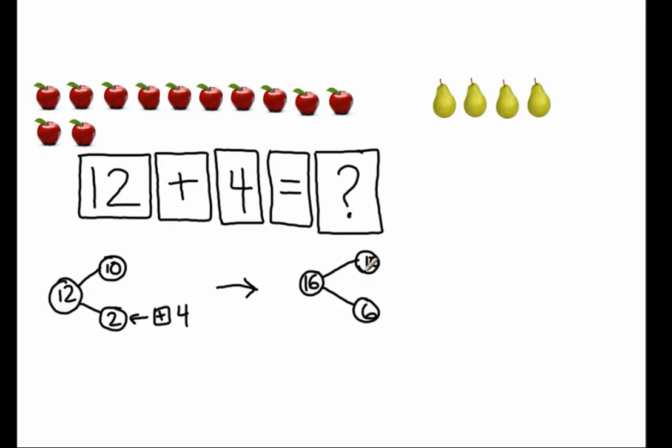And then I now know how many apples I have along with pears. I have 16 apples and pears or 16 pieces of fruit.